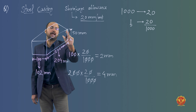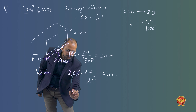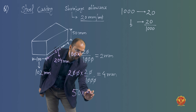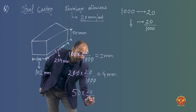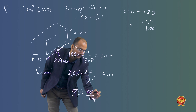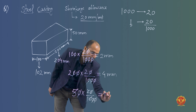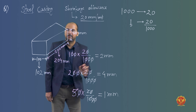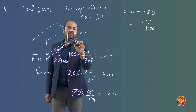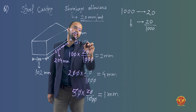Now the remaining height is 50 mm. For the 50 mm dimension, shrinkage allowance is calculated as 50 × 20 / 1000. The 10s cancel out, giving 1 mm. So we add 1 mm, making it 51 mm for the pattern.